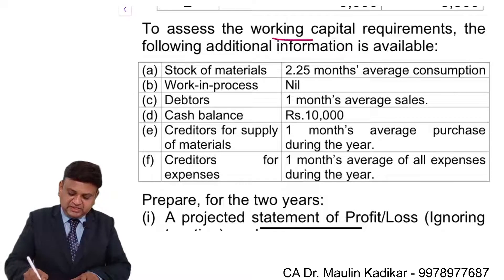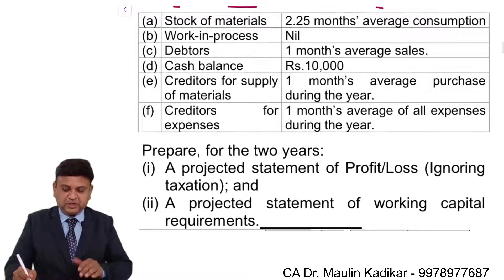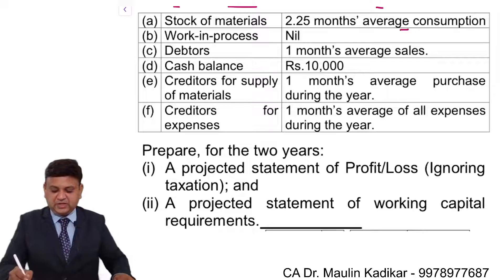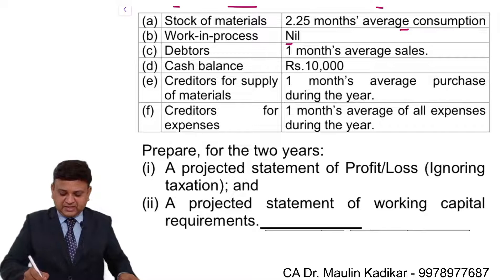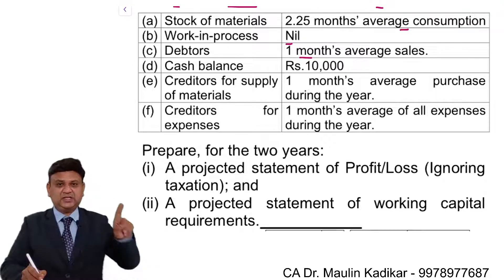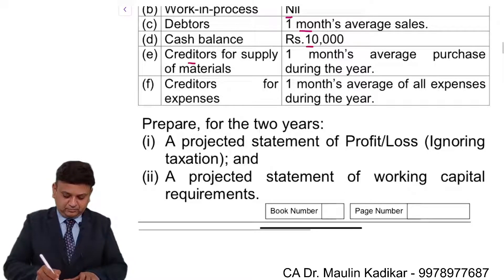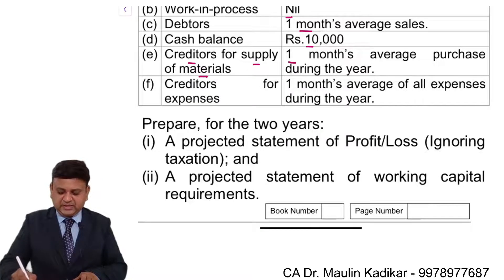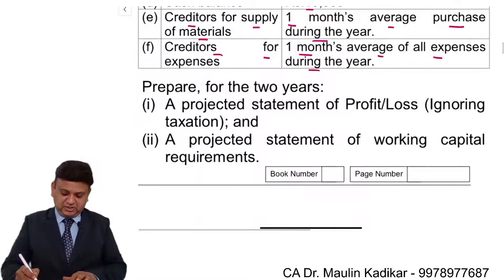To assess working capital requirement, the following additional information is available: stock of raw material — 2.25 months of average consumption; WIP — zero; debtors — average collection period 1 month; cash balance of 10,000. Creditors for supply of raw material — 1 month average purchases during the year. Creditors for expenses — 1 month average of all expenses during the year.